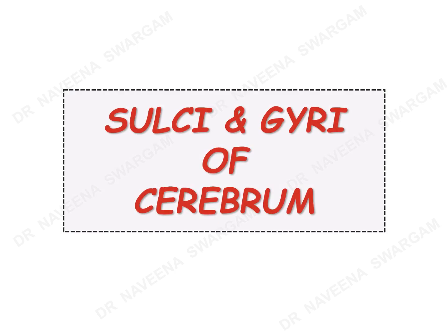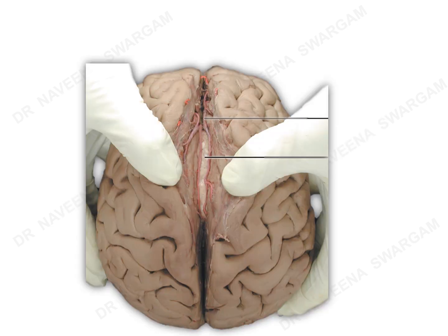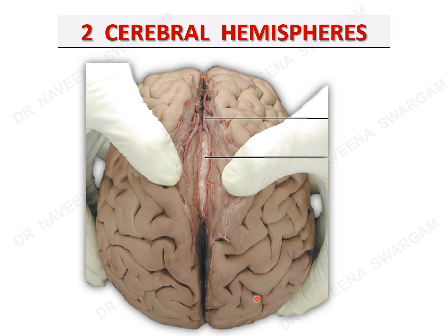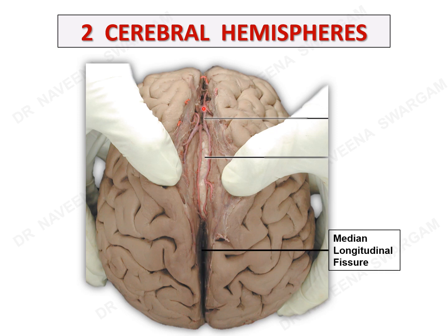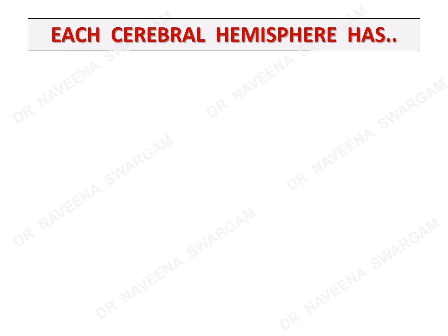Welcome to this video tutorial on sulci and gyri of the cerebrum. The cerebrum has two cerebral hemispheres — right hemisphere and left hemisphere — both separated by a deep median longitudinal fissure. They are incompletely connected through a white matter bundle known as the corpus callosum. Before we move on to sulci and gyri, let's see the gross features of each cerebral hemisphere.